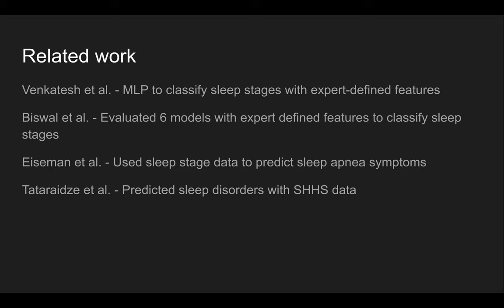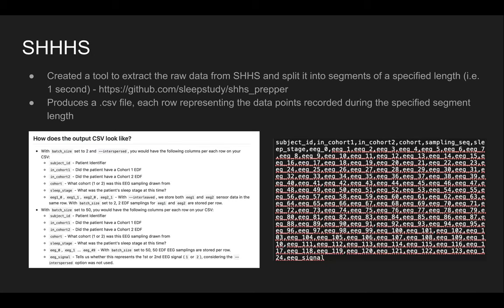There are multiple related works that have tried to tackle this problem. The SHHS dataset needed a lot of pre-processing — it was available in .edf files that were not ready for training a machine learning or neural network model. We created an ETL tool to load this into a more readily consumable CSV format, available at github.com/sleepstudy/shhs_prepper. It produces a CSV file where each row represents the data points recorded for a provided segment, and you can see the column labels we've chosen for our model training on the right.